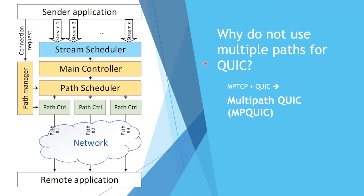Why do we pursue this research? Four years ago, Multipath QUIC Protocol was developed. It takes ready-for-use modules from QUIC Protocol — specifically the path manager — and the main controller and path scheduler from MPTCP Protocol, and path controllers from ordinary TCP Protocol. However, borrowing this code is not copy and paste; all these modules must be adjusted to the different principles of the new protocol.